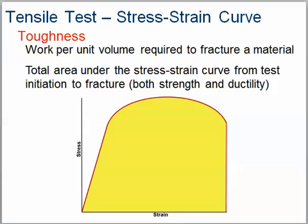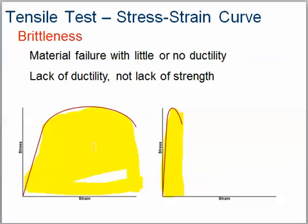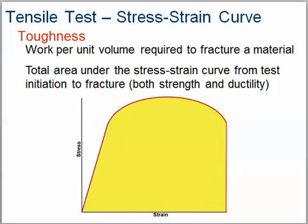One of the last things to talk about is toughness. This is work per unit volume required to fracture a material — the total area underneath the stress curve from the test. It involves both strength and ductility. This material has a certain amount of toughness; comparing the area under different curves, one object didn't have nearly as much toughness as the other. Toughness tells us the ability of a material to give before it breaks.